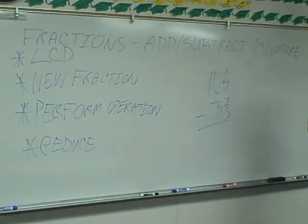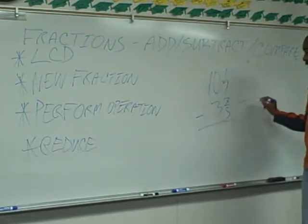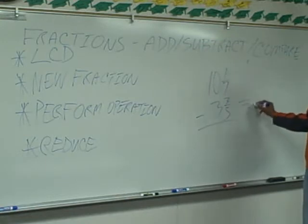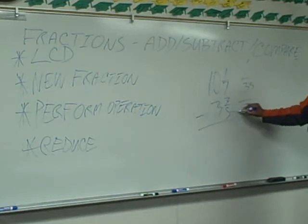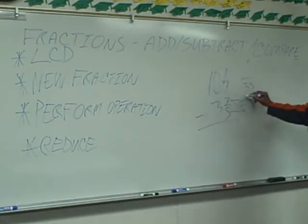First step is lowest common denominator. What's the lowest common denominator here? Thirty-five, right? Five goes into thirty-five how many times? Seven. Seven times three? Twenty-one.